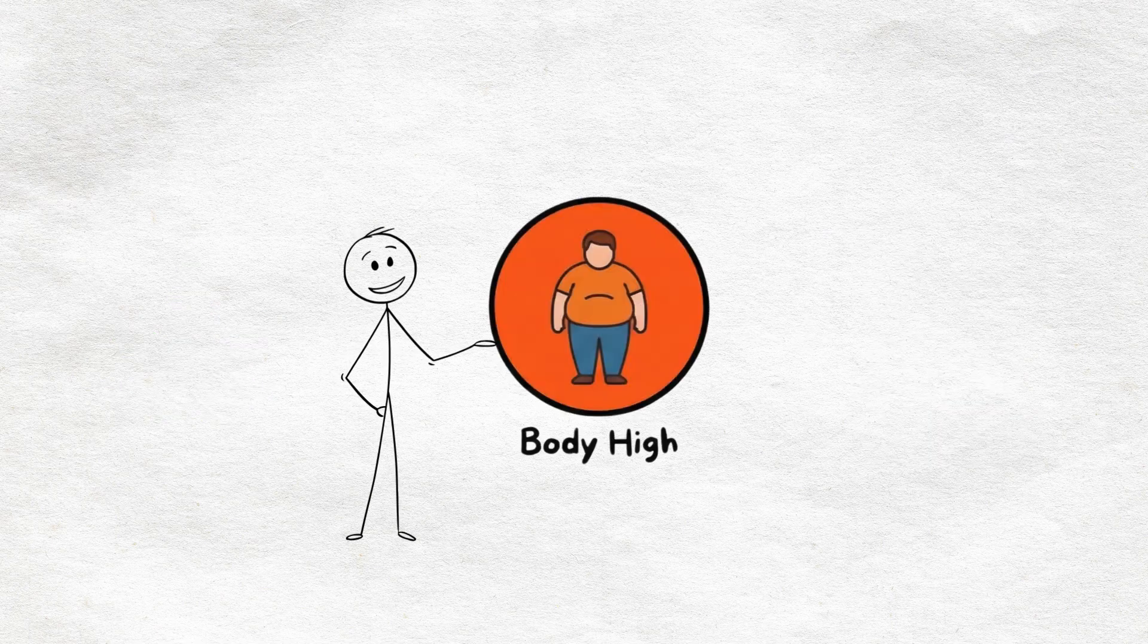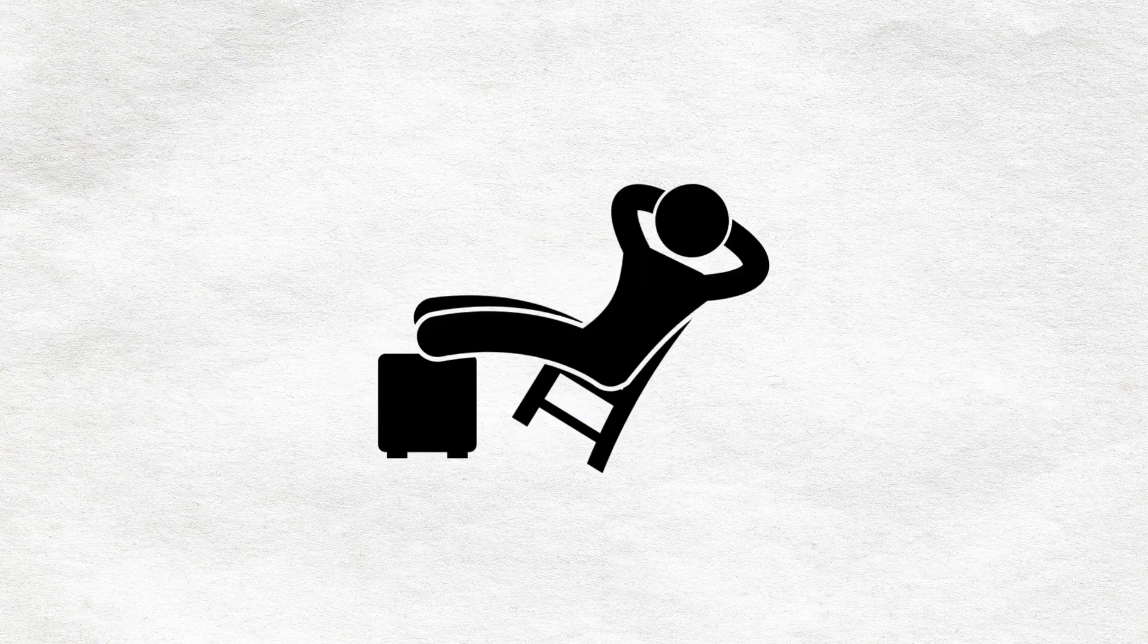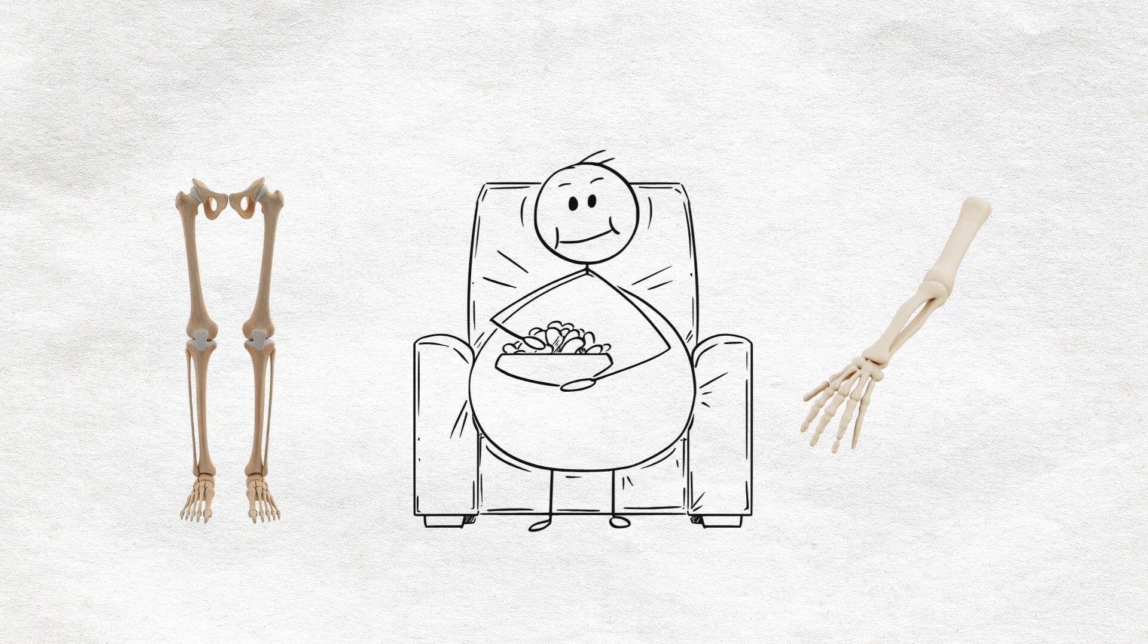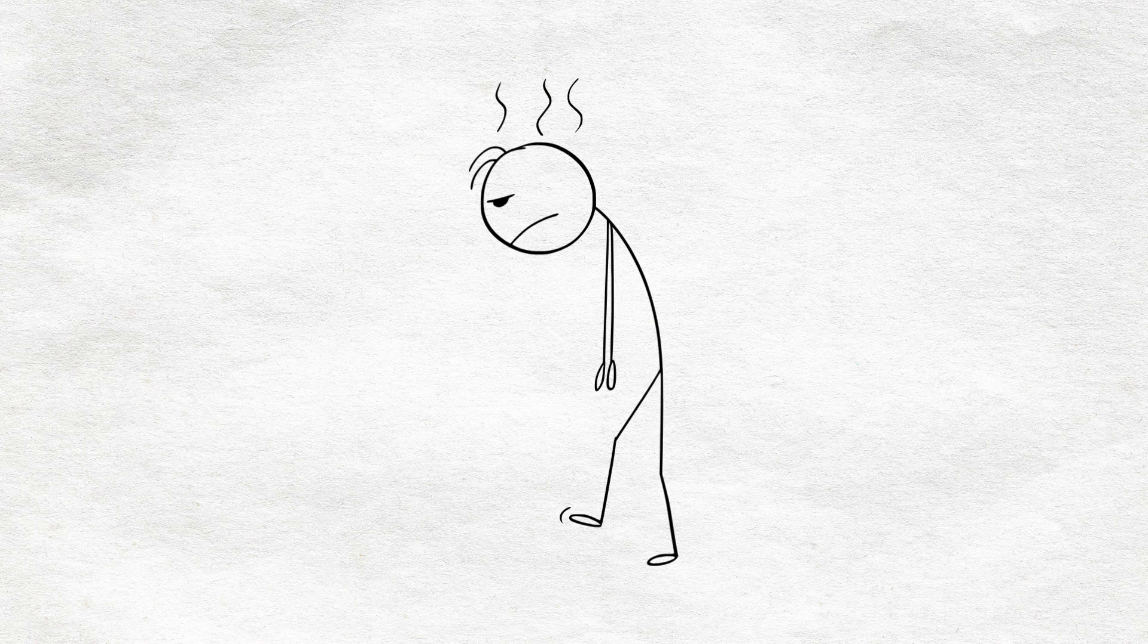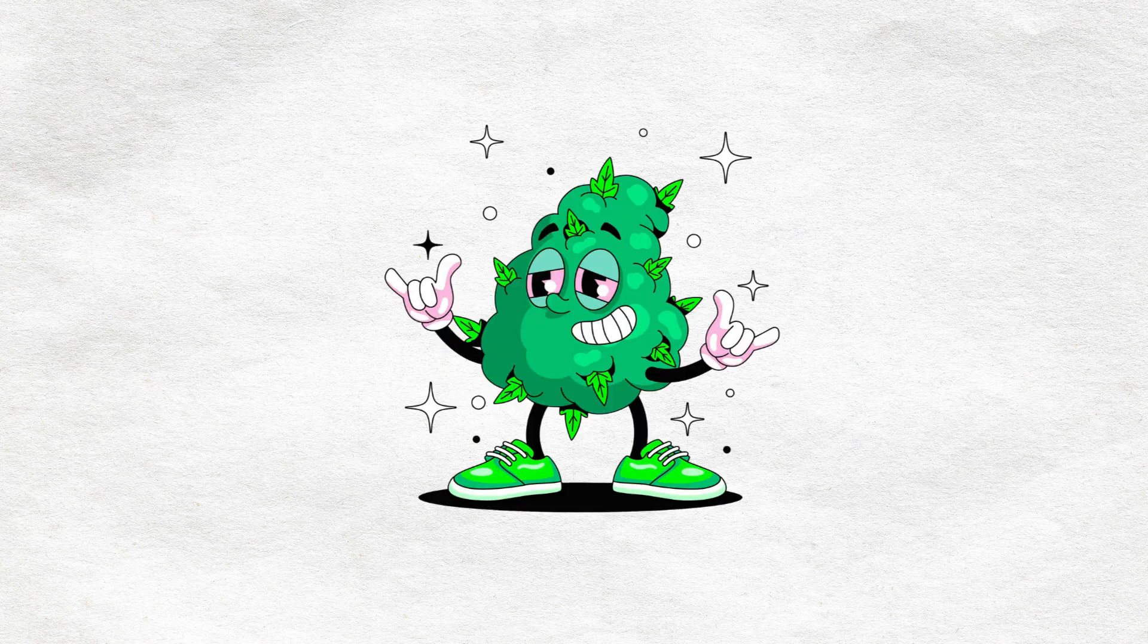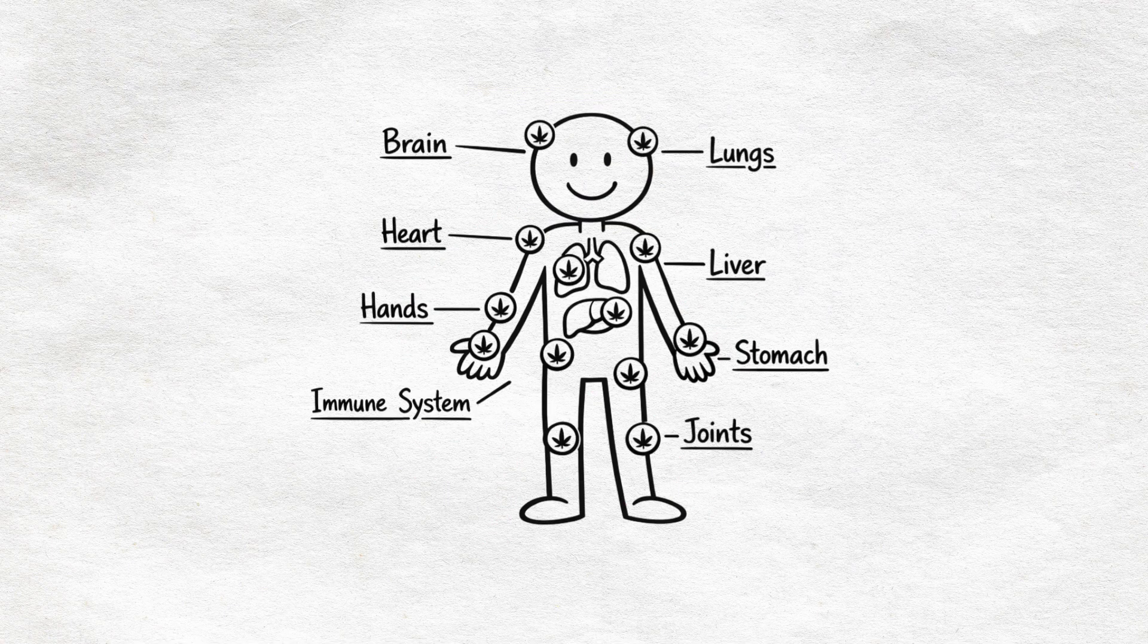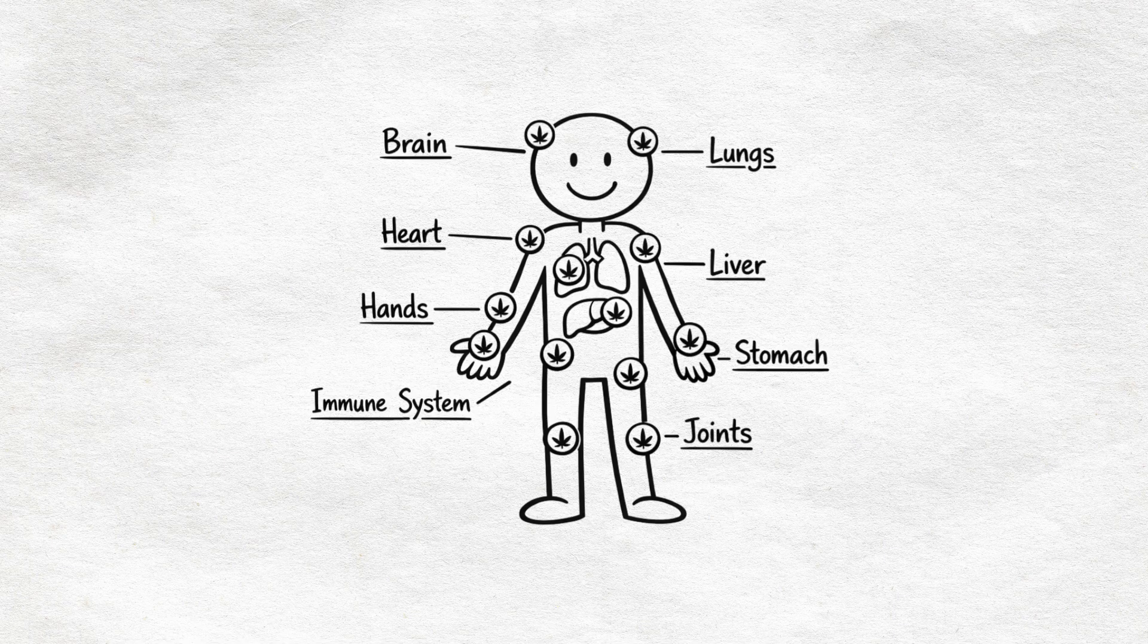Body high, melting into the couch. There's also the body high, that heavy, weighted sensation where your limbs feel warm and loose, like you're sinking into the furniture. Movement becomes effort, everything feels soft and distant. It's especially strong with certain strains, and it's completely separate from the mental effects.